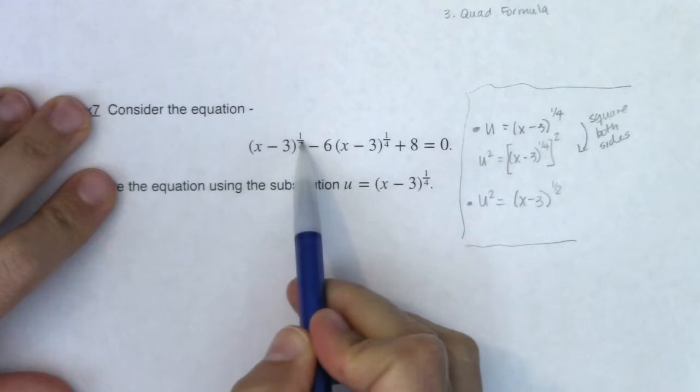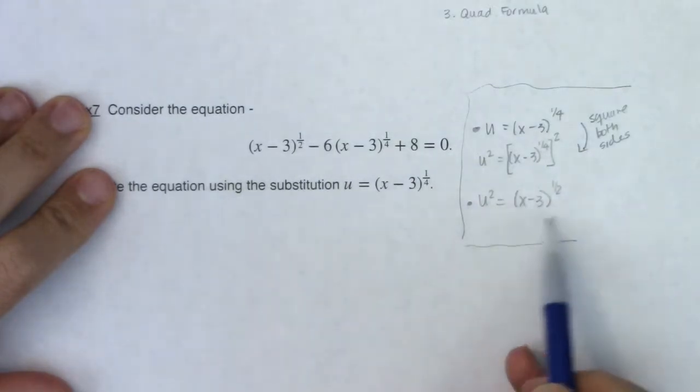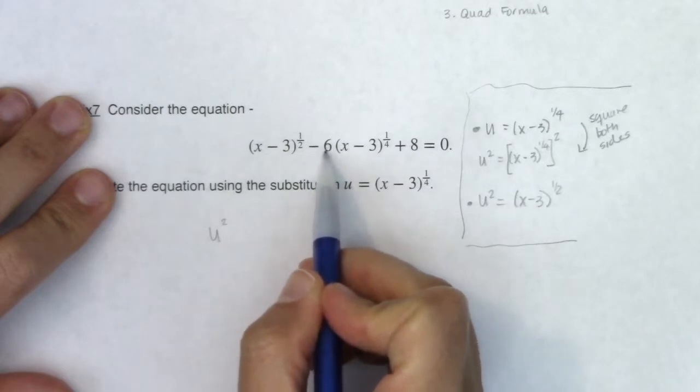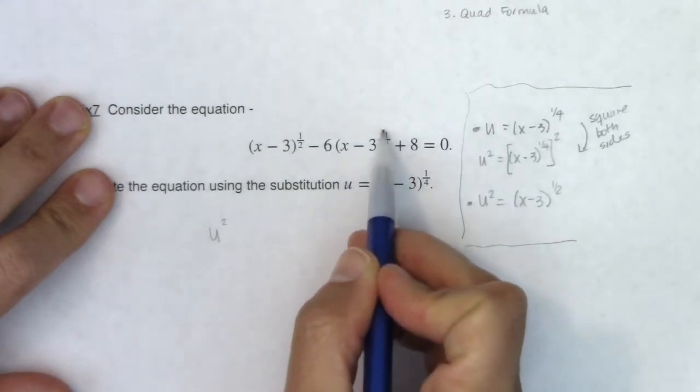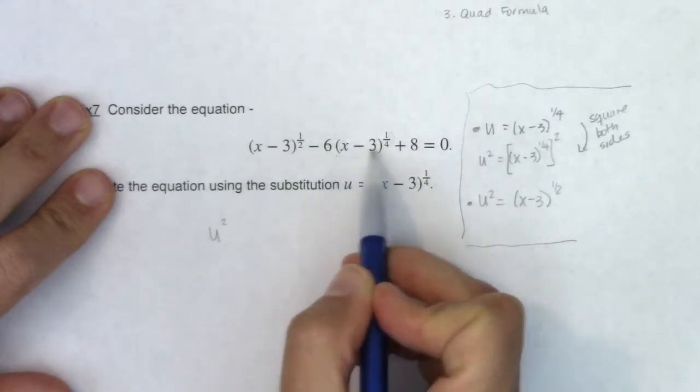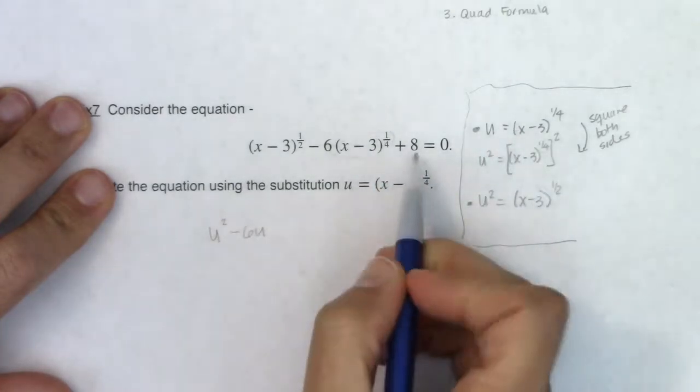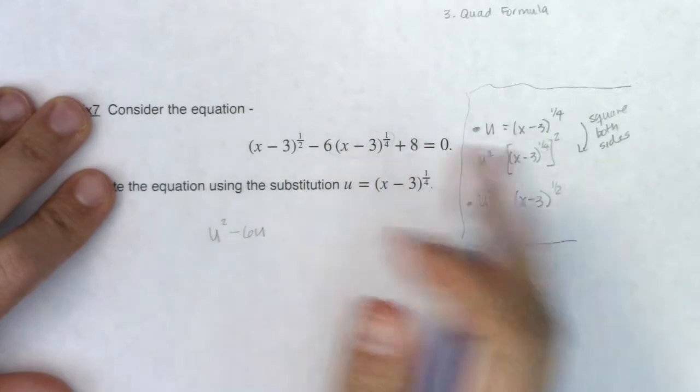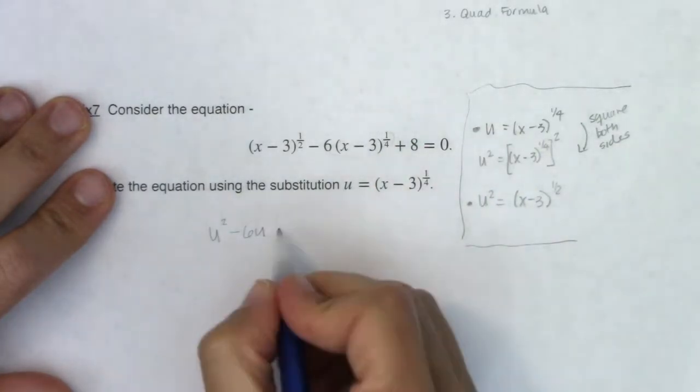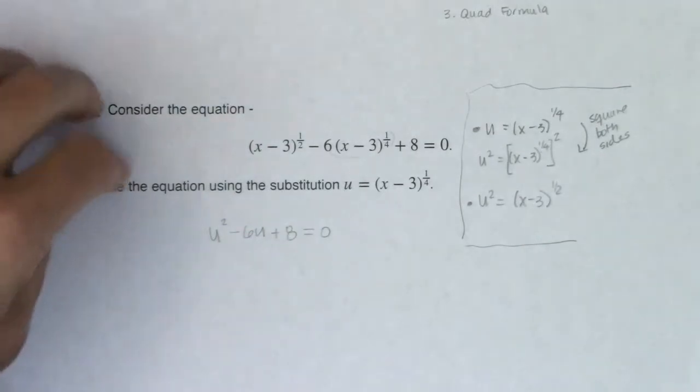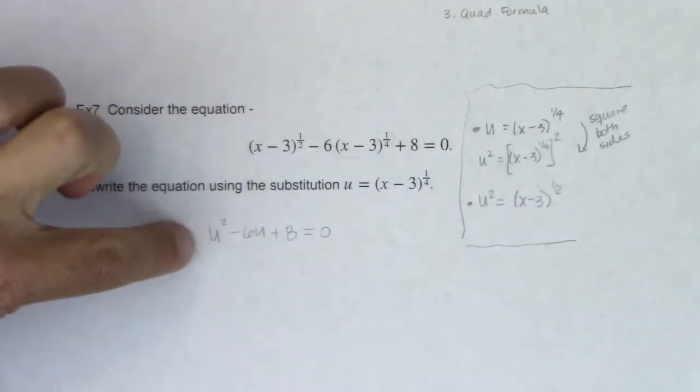Instead of x minus 3 to the 1/2 I'm allowed to write u squared. Instead of negative 6 times x minus 3 to the 1/4 I can substitute this x minus 3 to the 1/4 out with u. And then 8 has no x's in it, there's no variable in it, it's constant so I'm just gonna write plus 8. And while this looked really ugly, this is not too bad.